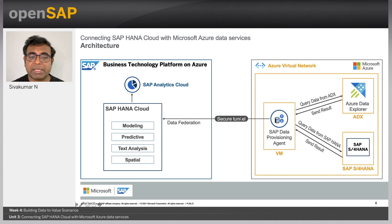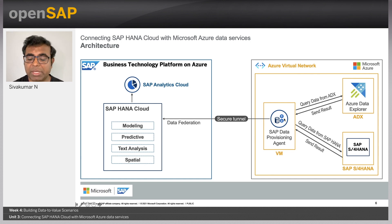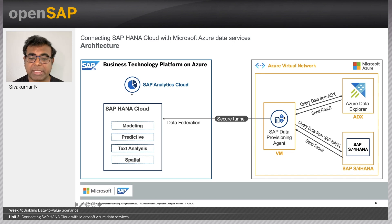Now let's talk about the architecture. The DP agent is installed in a virtual machine inside Microsoft Azure. The virtual machine and the DP agent maintain the connection and query federation to Azure Data Explorer. The DP agent is constantly connected to SAP HANA Cloud, and any query from SAP Analytics Cloud is always routed via the DP agent. We will get into the details of how to set up this connection, including the VM configuration, in the next couple of slides.